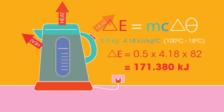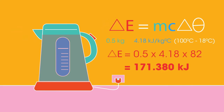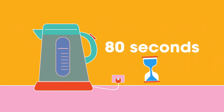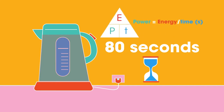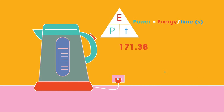Heat and sound will be lost to the surroundings. If this kettle took 80 seconds to boil, then we can begin to estimate the power of the kettle. Power is the rate at which energy is transferred: power equals energy over time. So we get 171.38 divided by 80, which equals 2.14 kilojoules per second, or 2.14 kilowatts. This answer will be slightly lower than the actual power due to the kettle being uninsulated.